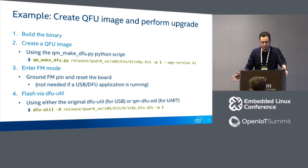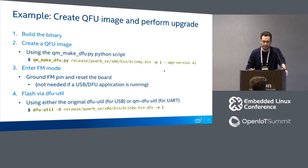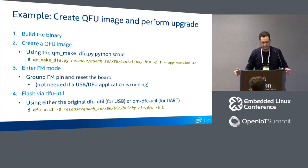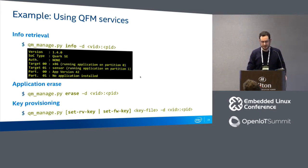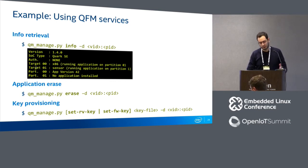To create a firmware image, you specify the compiled binary, the target partition, and optional metadata like the application version. Then you enter firmware management mode and flash the image using DFU-util or QM-DFU-util depending on whether you use USB or UART, specifying the alternate setting of the target partition. You can also use the QFM management script to retrieve device information such as bootloader version, SOC type, number of cores, and whether an application is installed.